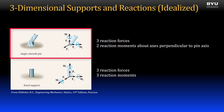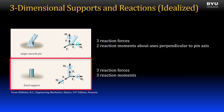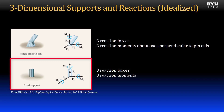An idealized pin support in three dimensions restricts translation in all directions, so it produces three reaction forces. The support permits rotation of the member about the pin, but prevents rotation about the two axes perpendicular to the axis of the pin. Therefore, it forms a total of five support reactions. Last, a fixed support in three dimensions restricts translation in all three directions, and rotation of the member about all three axes at the support, resulting in three reaction forces and three reaction moments for a total of six unknowns.